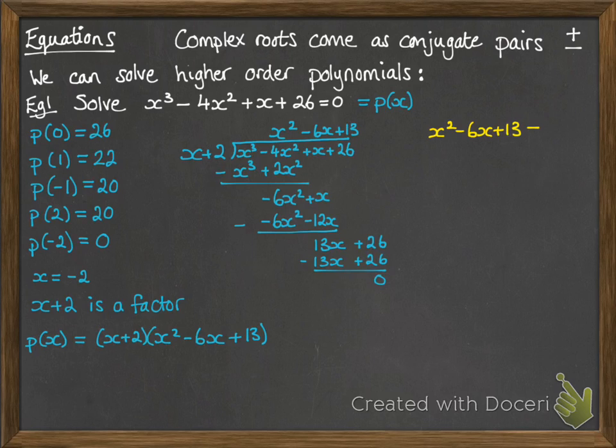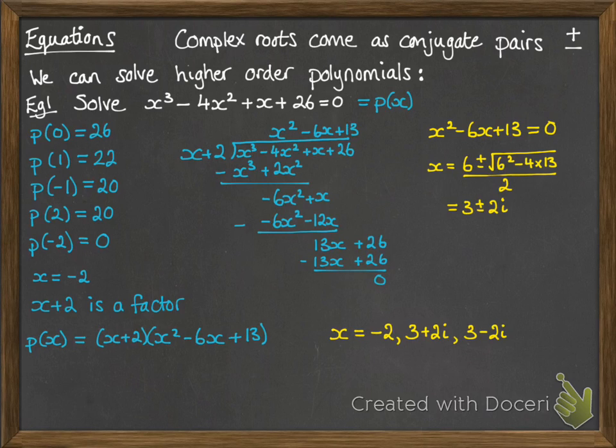With that one, we now need to solve that quadratic to get the other two roots. Using the quadratic formula, it looks like this. We get 3 plus or minus 2i. So all of our roots are minus 2, 3 plus 2i, and 3 minus 2i.